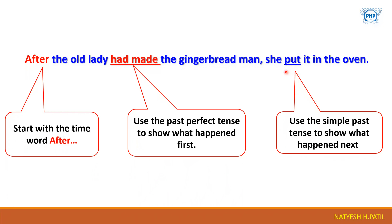So to show what happened next, they use simple past tense. First there would be words like 'after' and 'after that' and 'first', and with those the past perfect tense will be used. Then in the following clause, simple past tense will be used. Understood? Very nice.